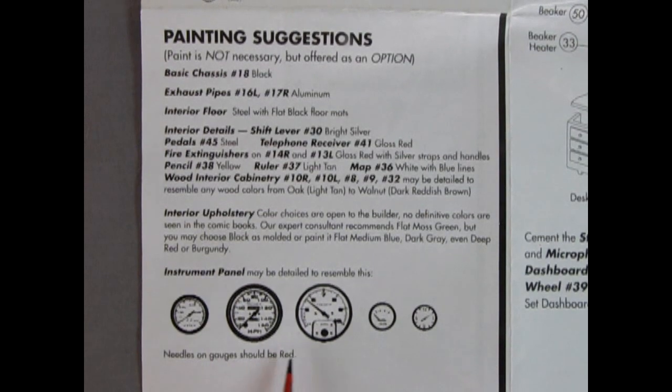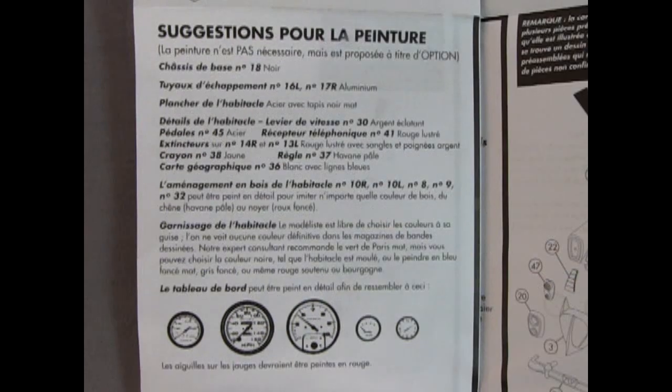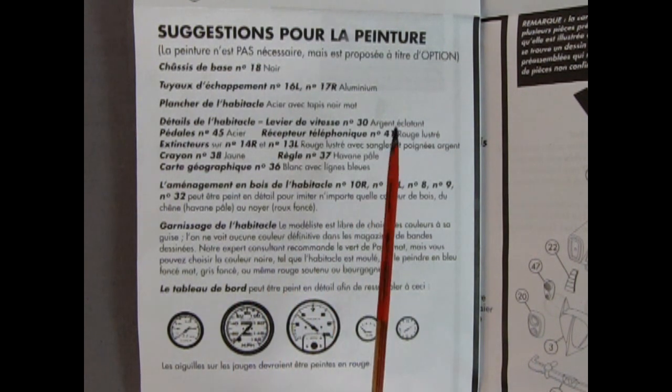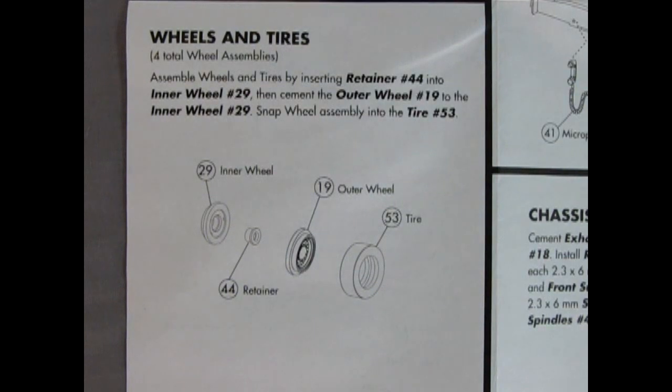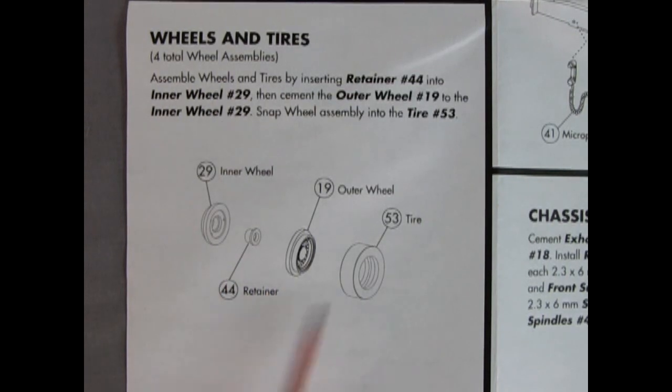It says needles on gauges should be red. If you are a French speaker, perhaps up in Canada, then the instructions also include French on the back side. Next up we have the wheels and tires and you want to make sure you don't lose one of these because you know, Batmobile, if it loses a wheel, the Joker will get away. Anyway, we have our inner wheel, our wheel retainer, the outer wheel and the tire.